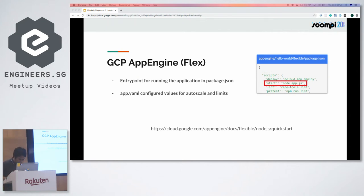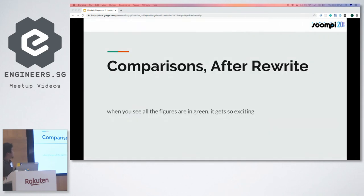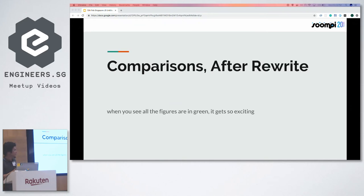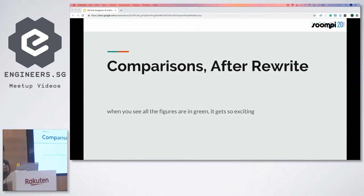You're not here for the story — you want to see the numbers. You want to see how the rewrite went. On that note, I'm going to give the floor back to Wei Yuan to explain the metrics after the rewrite.